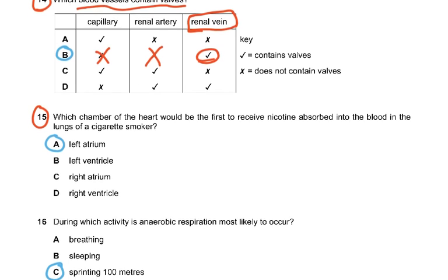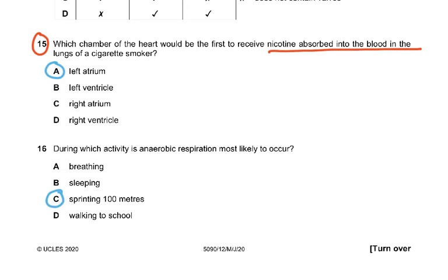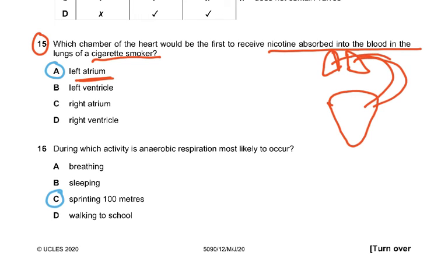Question 15: Which chamber of the heart would be the first to receive nicotine absorbed into the blood in the lungs of a cigarette smoker? When it enters, it enters to the pulmonary vein, so the pulmonary vein enters the left atrium. It's a question of that chemical entering the lungs and then being carried away into the pulmonary vein which connects the lungs to the heart. From the lungs comes the pulmonary vein, and this pulmonary vein would be containing nicotine and that nicotine would enter the left atrium.